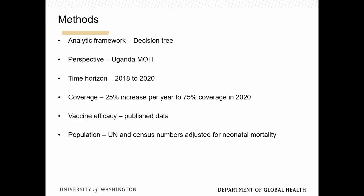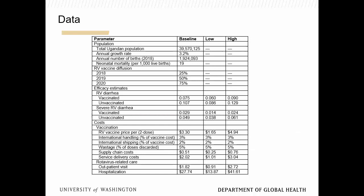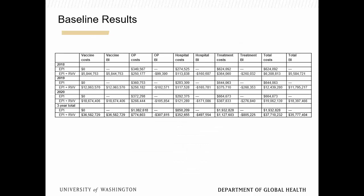We used published data for efficacy and UN Census data for population figures. The vaccine reduces not just mortality but also outpatient visits and hospitalizations. The model was a simple decision tree — vaccinated vs. not vaccinated, with program vs. no program, then diarrhea outcomes, then outpatient visits and hospitalizations. We had all of Uganda's population, growth rates, number of births, birth cohorts, diffusion rates, and the differences in diarrhea and severe diarrhea between vaccinated and unvaccinated groups as proxies for outpatient and hospitalization costs.